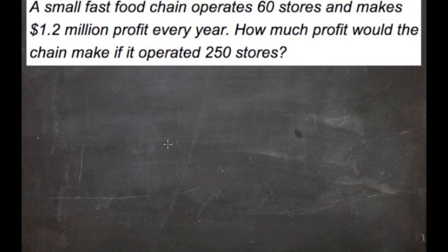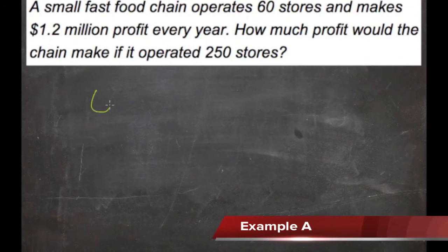A small fast food chain operates 60 stores and makes 1.2 million profit every year. So 60 stores is 1.2 million. How much profit would the chain make if it operated 250 stores?